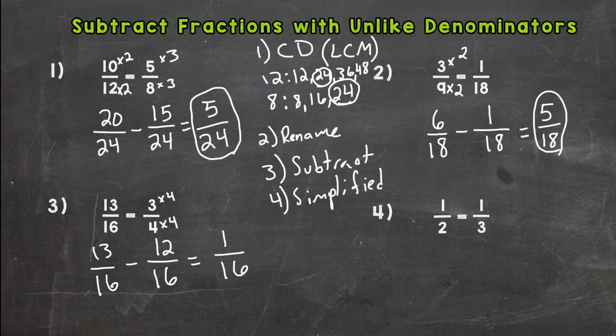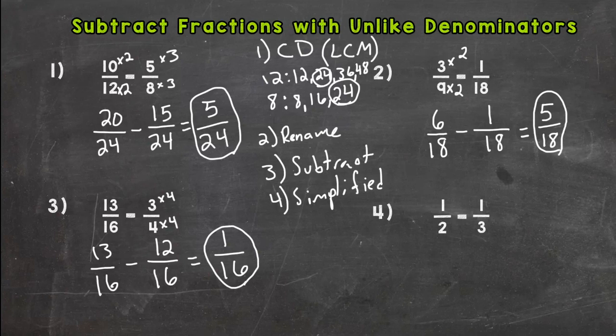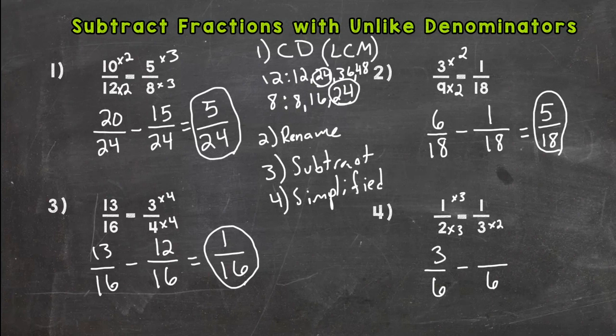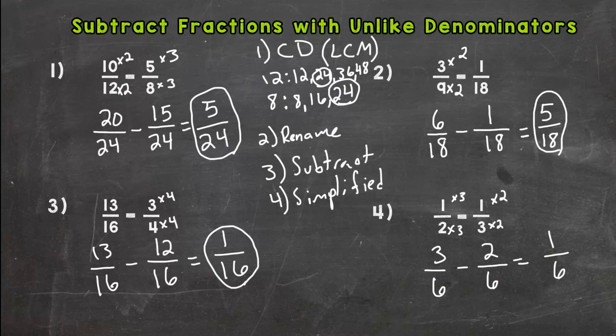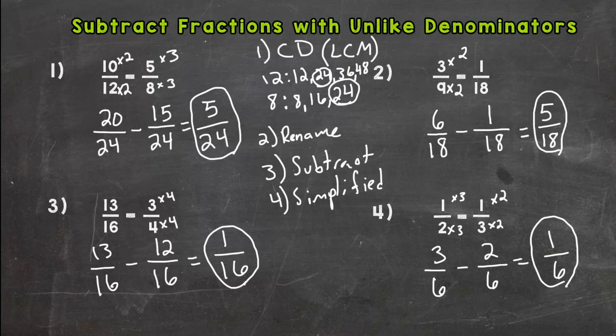Number 4: 1/2 and 1/3. We need our least common multiple, and if you were to write out your list for 2 and 3 or maybe you just recognize what it's going to be, we have a least common denominator of 6. 2 times 3 is 6, 1 times 3 is 3. 3 times 2 will give us that denominator of 6, so 1 times 2 is 2. So we get to 3/6 minus 2/6. We have a common denominator so we are able to subtract. 3 minus 2 is 1, common denominator of 6. This fraction is simplified, the only common factor between 1 and 6 is 1, so we are done. Our answer to number 4 is 1/6.